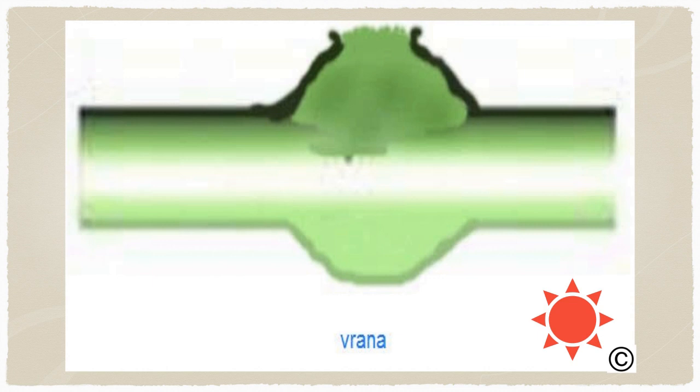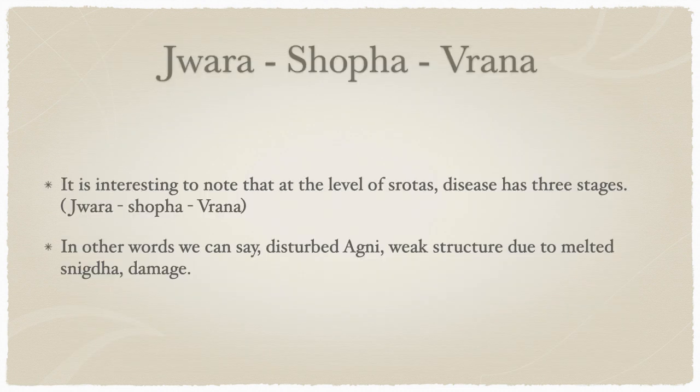We are seeing a complex of jvara, shofa, and vrana. All disease processes can be understood through these three aspects. In other words, disturbed agni leads to a weak structure due to melting of snigtha, and that causes damage. These three — jvara, shofa, and vrana — are not just separate diseases but represent separate stages of the disease process.